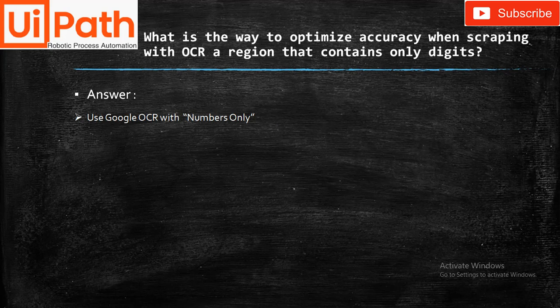What is the way to optimize accuracy when scraping with OCR a region that contains only digits? Answer: Use Google OCR with the Numbers Only option — this will help you get or display accurate data.